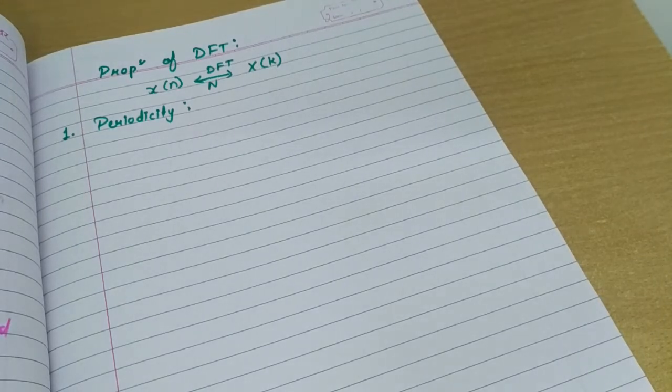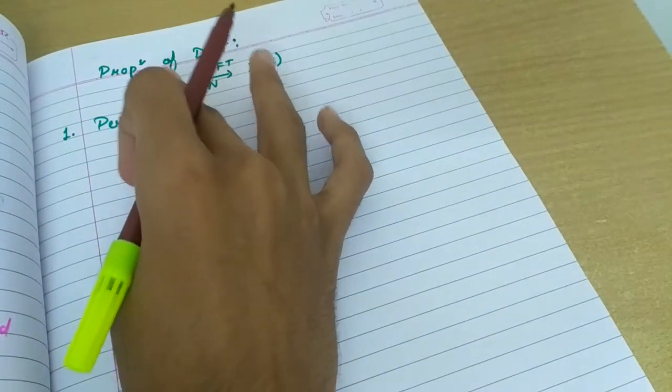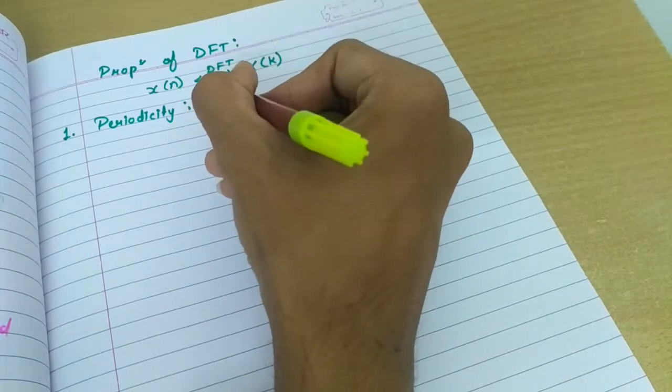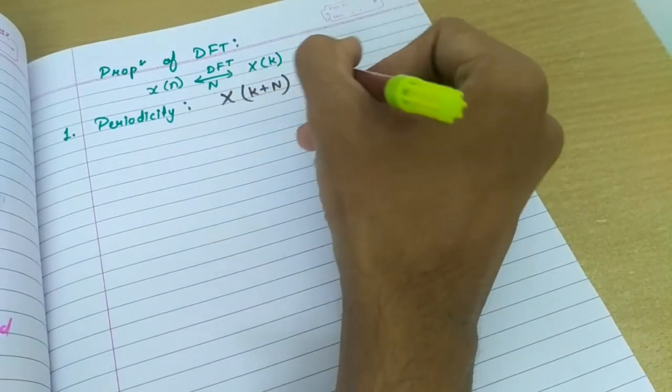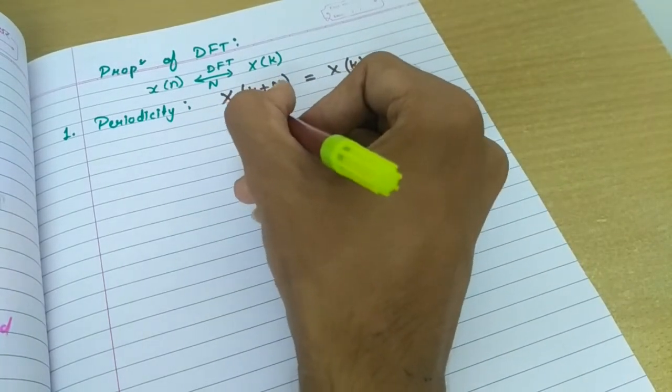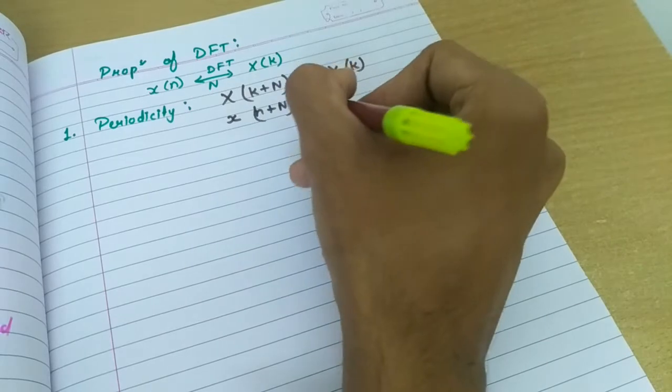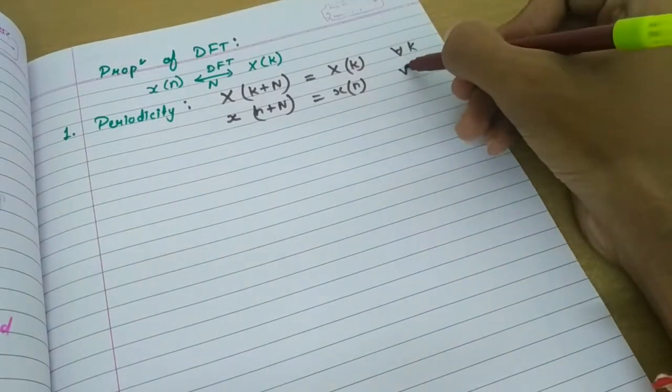If Xn and X of k are N-point DFT pair, you can say if this forms N-point DFT pair, then what this property says is that X of k plus n is nothing but X of k. Similarly, small X of n plus n is nothing but X of n. Clear? For all k and for all n.